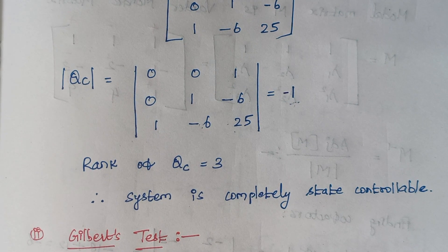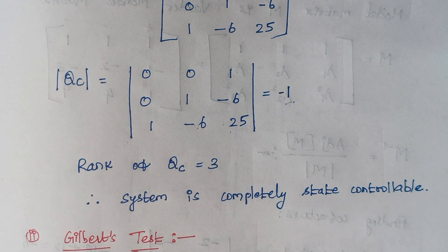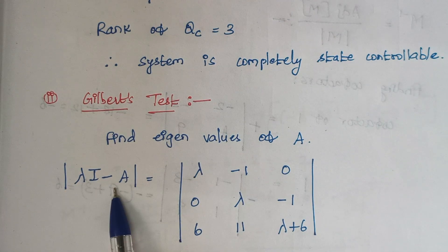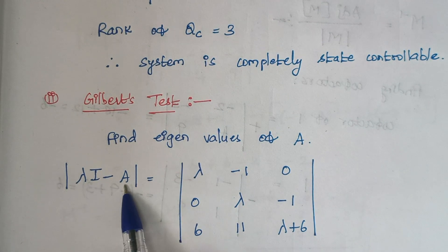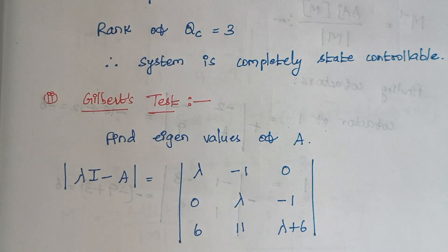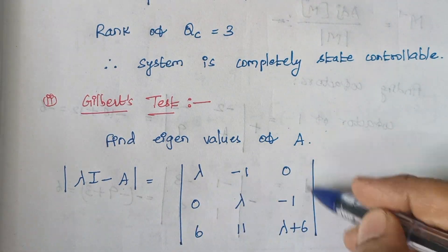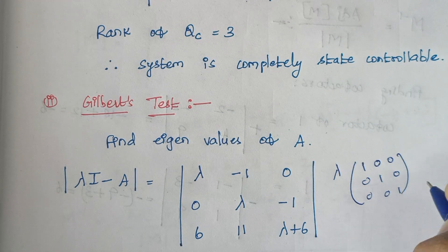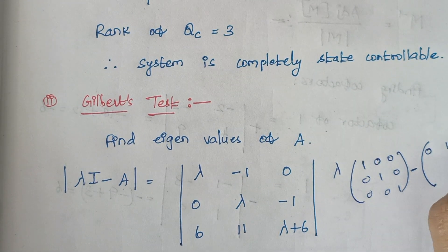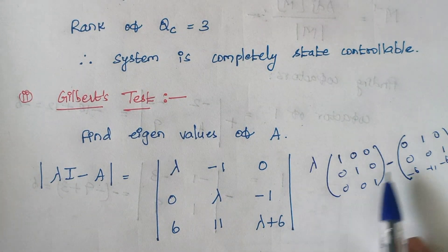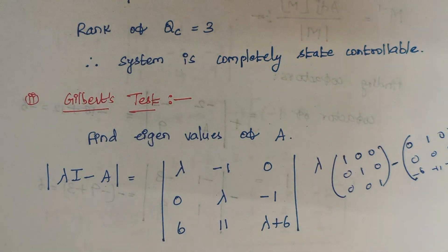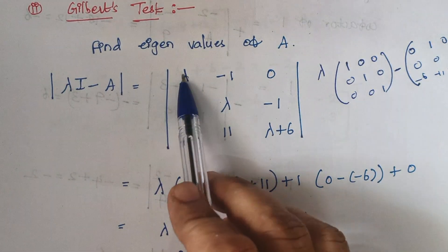Next is Gilbert's test. Here we have different eigenvalues, so the first step is to calculate the eigenvalues of A given by det(λI − A). The A matrix is given in the problem, and λI is a diagonal matrix. Subtracting, we form the matrix λI − A and then take its determinant.